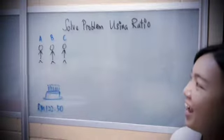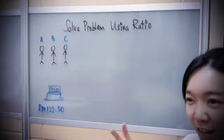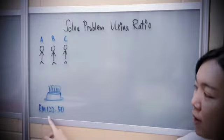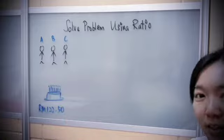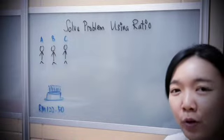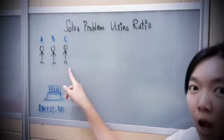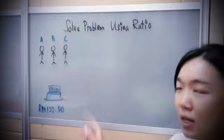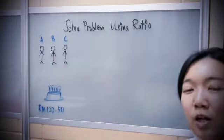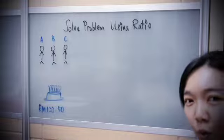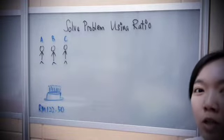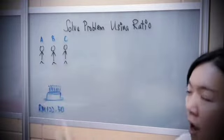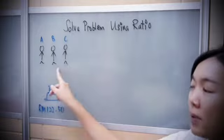Here we go to the story: A, B, and C are friends sharing money to buy a cake for a birthday party. The cake costs RM122.50. Today we're going to find out how much money is paid by C, how much by B, and how much by A. Listen carefully — A, B, C do not share the cost evenly. The trick is: C shares half of the price of the cake, and A pays a quarter of what B pays.